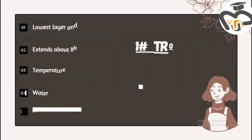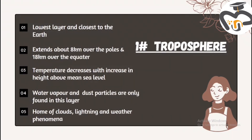Number one: the troposphere. It is the lowest layer and closest to the Earth. It extends about 8 km over the poles and 18 km over the equator. The temperature decreases with increase in height above mean sea level. The water vapor and dust particles are only found in this layer. This layer is the home of clouds, lightning, and weather phenomena, which means we can only find weather phenomena in the troposphere.